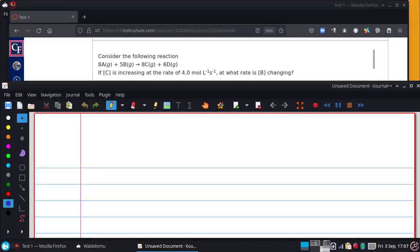If C is increasing at a rate of 4 molarity per second, at what rate is B changing?